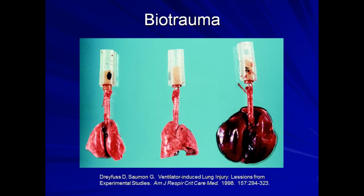Here is a rather dramatic demonstration of extreme biotrauma. On the left are normal rat lungs. In the middle are rat lungs that have been ventilated at high airway pressures for 5 minutes, where regional atelectasis has developed. And finally, on the right are rat lungs that have been ventilated at high airway pressures for 20 minutes, where extreme pulmonary edema is grossly evident.